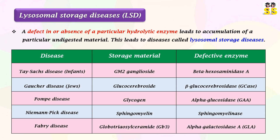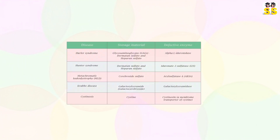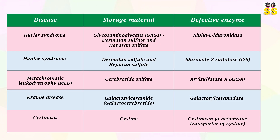The tabular data shown here summarizes a few lysosomal storage diseases caused by specific enzyme deficiency and the material stored in lysosomes. These include Tay-Sachs disease, Gaucher disease, Pompe disease, Niemann-Pick disease, Fabry disease, Hurler syndrome, Hunter syndrome, metachromatic leukodystrophy, Krabbe disease, and cystinosis.